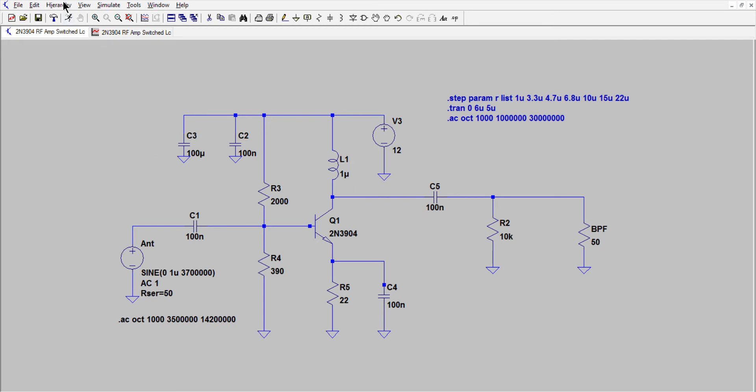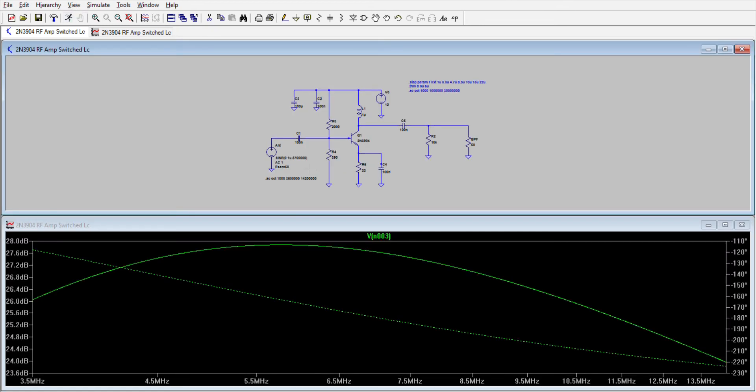So what we can do is we can hit the old simulated man up here. In this particular case, we are looking at the AC analysis. And we are starting at 3.5 megahertz and running up to 14.2 megahertz. Which we see here.